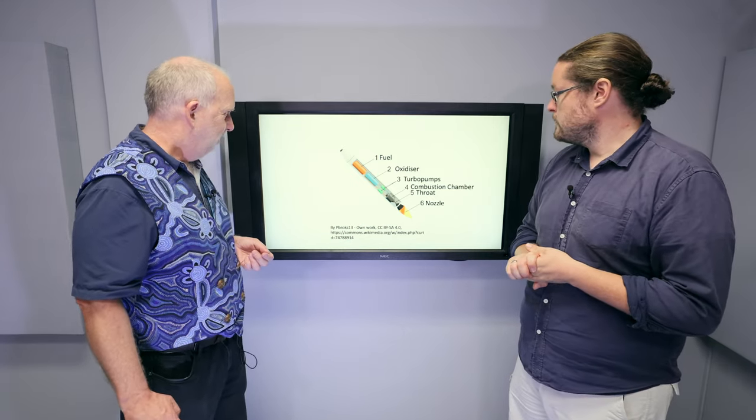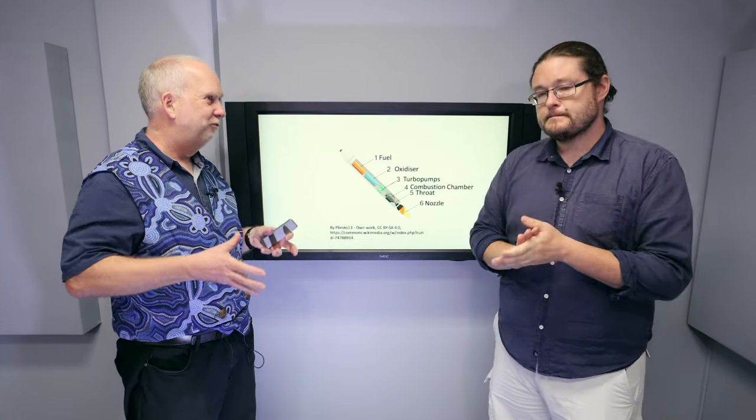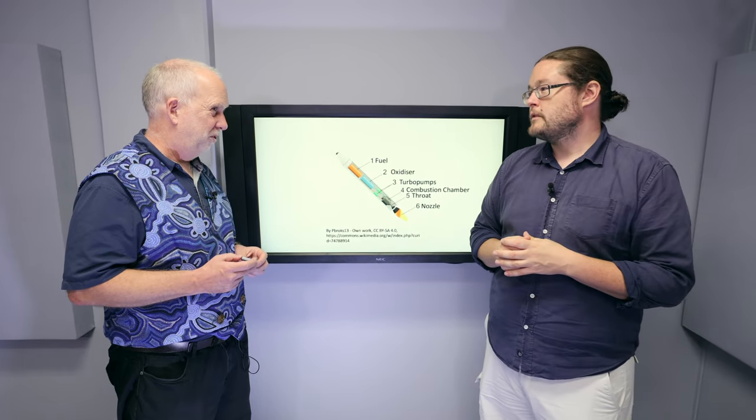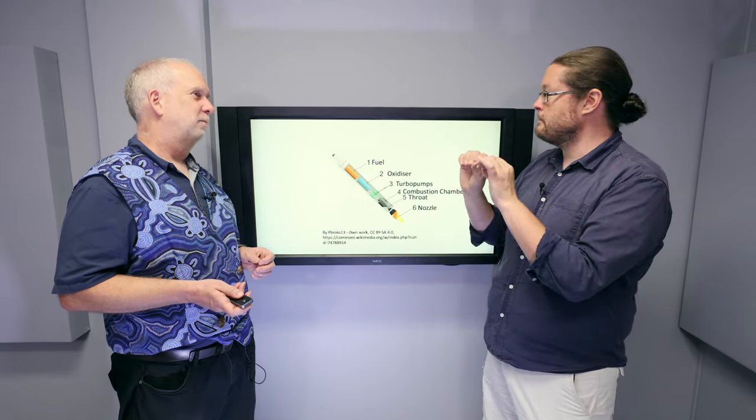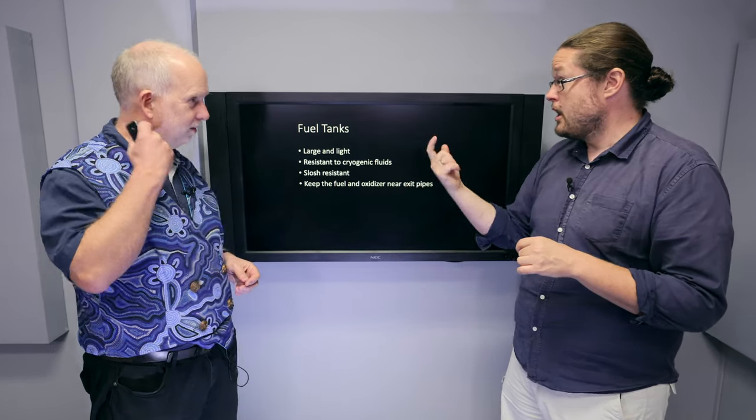Great. So starting with the tanks, of course, the fundamental problem here, as we talked about with this whole delta V thing, is we really have not much mass to play with. Exactly. So we need to minimize as much as possible the tanks, which, as you said, is actually the majority of the body of the rocket.